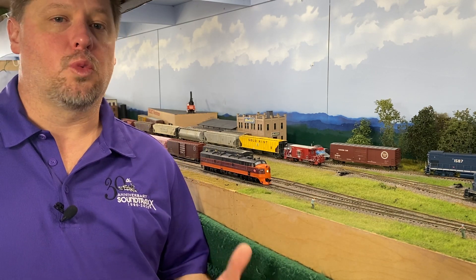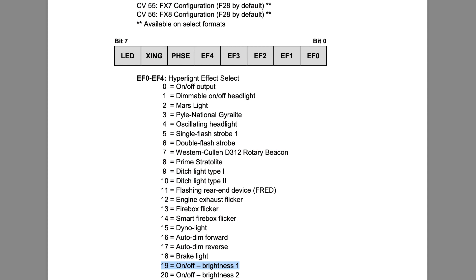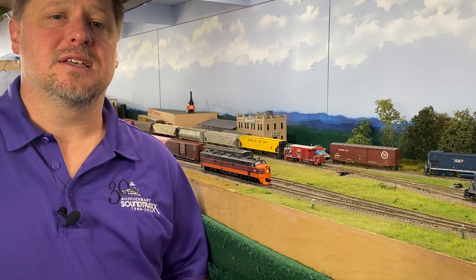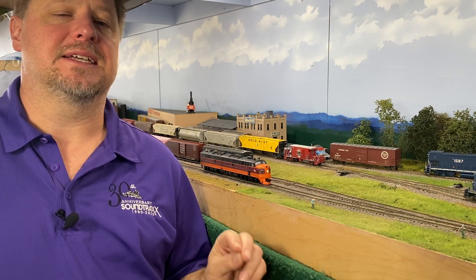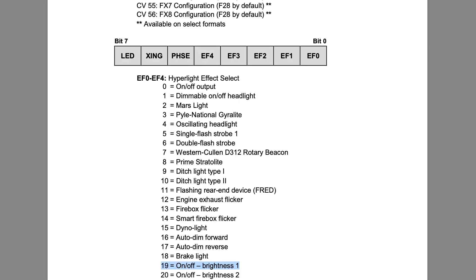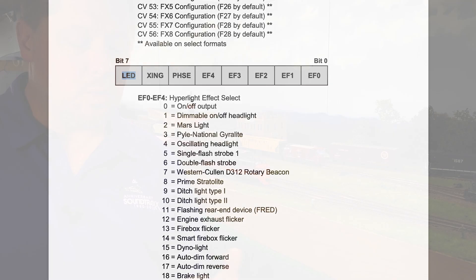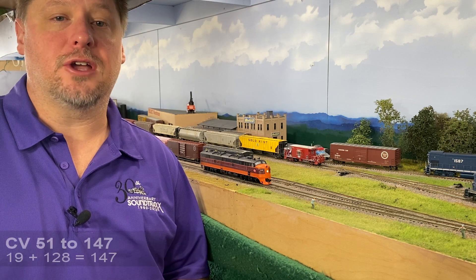We also have number boards and a Mars light on this, so let's go ahead and set those. The number boards are wired to FX3. FX3 uses CV 51 to determine the lighting effect that's going to be displayed. In this case, these are number boards, and so what we're going to use is one of the new Tsunami 2 features called On-Off Brilliance 1. We're going to set this to turn on those lights, then use a CV to determine how bright it is. So we look at CV 51 and go through the list — our On-Off Brilliance 1 is set to a value of 19. There are also modifiers such as phase A, phase B, crossing logic, and LED compensation. The only one we want to enable is LED compensation because these are LEDs. So we're going to take CV 51 and set it to a value of 147.